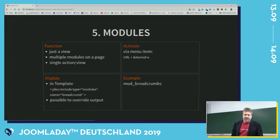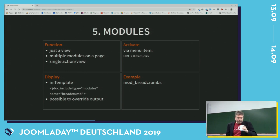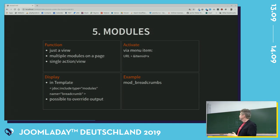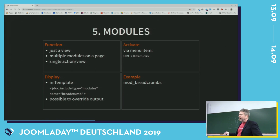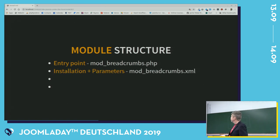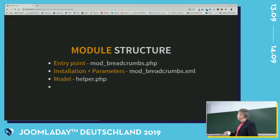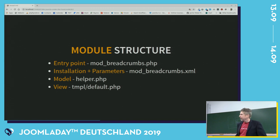Modules are really simple. While components have different views, modules have just one view — they have a single action. You can have multiple modules on one page. They are also defined in the template where they should be put, and you can override them. The menu item determines which modules are loaded. The structure is really simple: you have an entry point, an XML file with the installation stuff and parameters. The model is in the helper.php — if you want to retrieve information from the database or other sources. The view is, of course, what you see on the page.